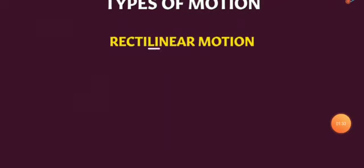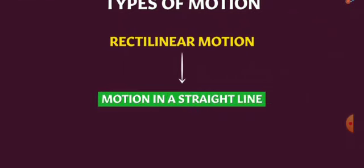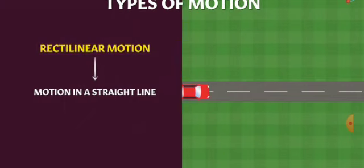Now types of motion. First is rectilinear motion. Motion in a straight line is known as rectilinear motion. When anything is moving in a straight line then it is known as rectilinear motion. Here is the example: movement of a car in a straight line is rectilinear motion.